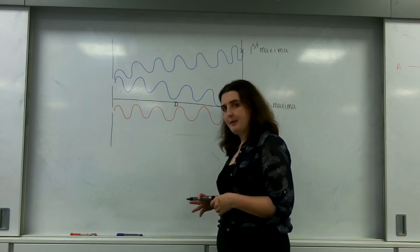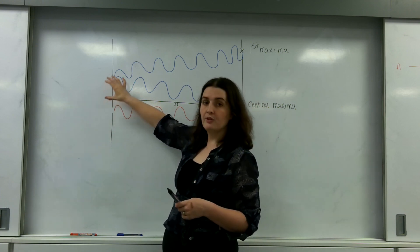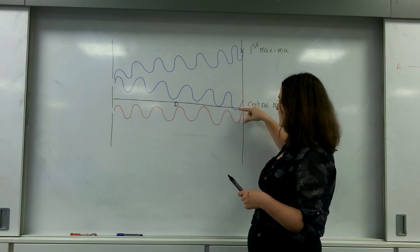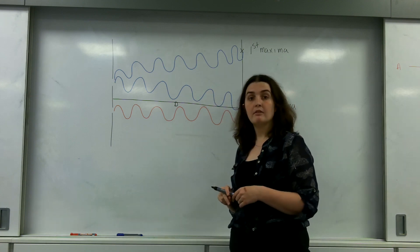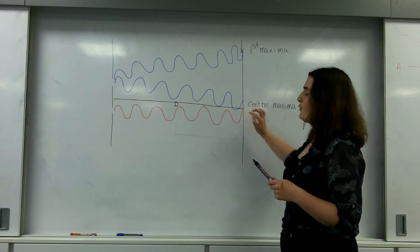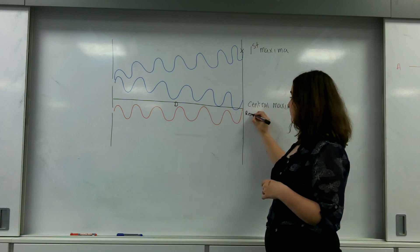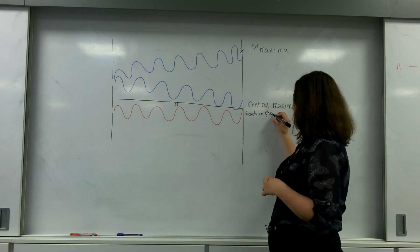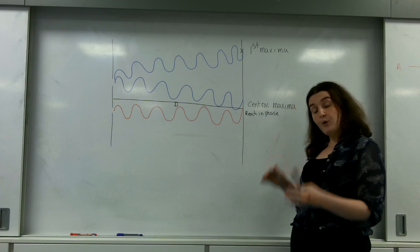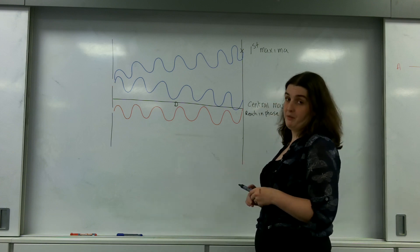So I'm just going to explain what's happening. These are my two sources — I'm going to draw a red wave and a blue wave. When they come out, they travel to the screen. This one travels six waves until it reaches the screen, and this one also travels six waves before it reaches the screen. So they're going to reach the screen in phase — they reach in phase here, which means you get a maxima. This is called the central maxima, because they've both travelled the same distance.